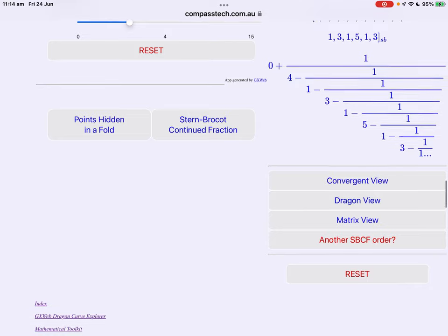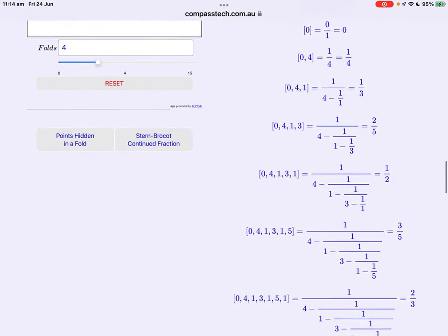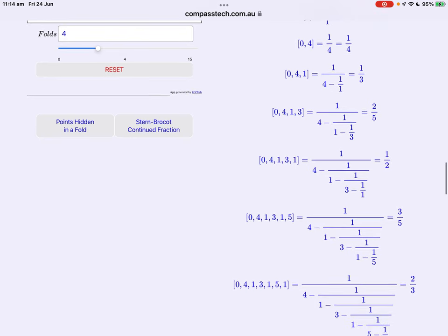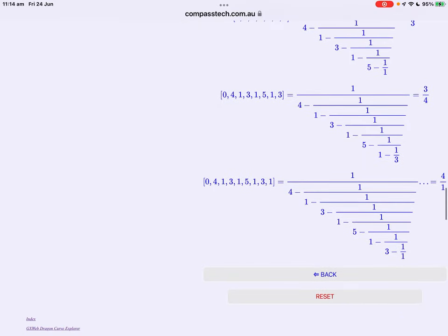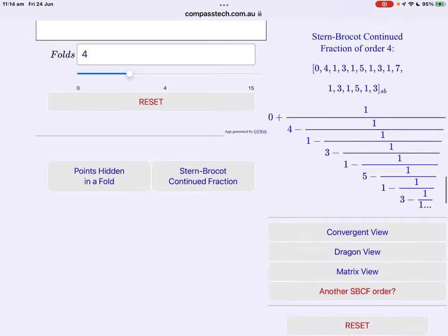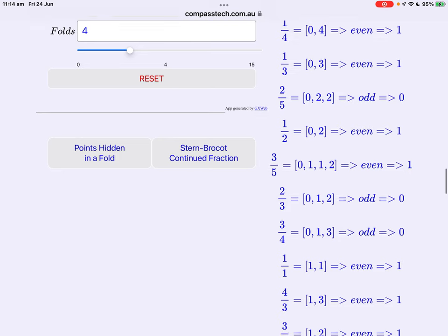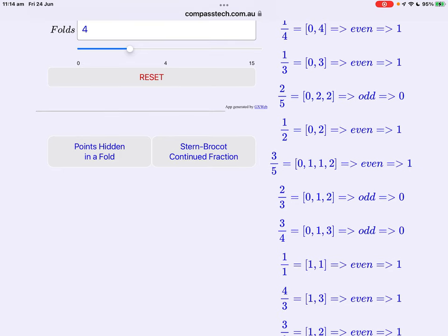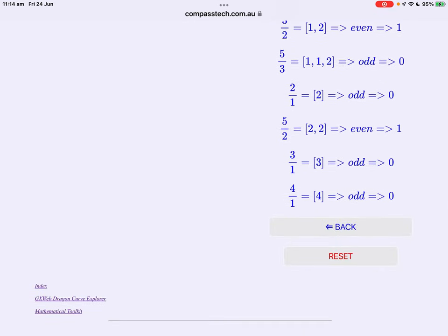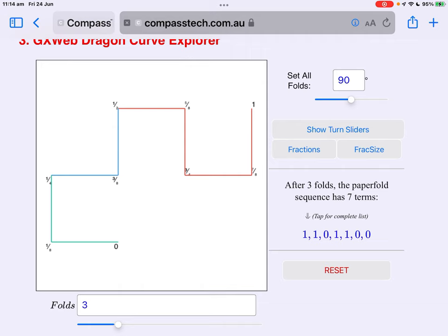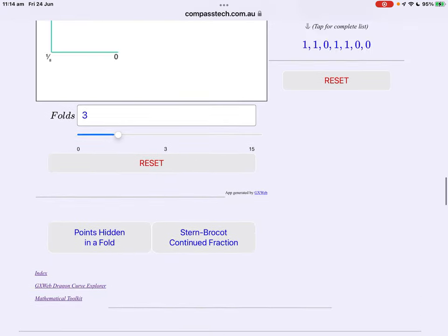Now the continued fraction of order four, one quarter, one third, two fifths, a half, three fifths, two thirds and so on. And as we just saw, for these convergents expressed as continued fractions lead to our paper fold sequence.